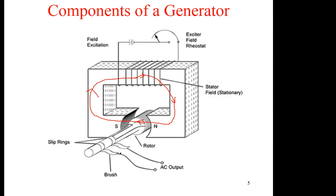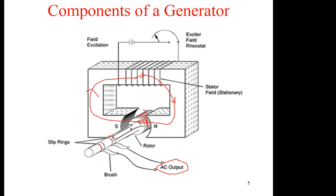We also have our brushes, which are used together with the slip rings. You realize when you talk about slip rings and split rings, that is what will differentiate the DC generator from an AC generator — we'll talk about that later. Then we also have the rotor, in which we have our coils. These are the conductors which will be cutting the magnetic field, and in that case we have a generated EMF as an AC output.